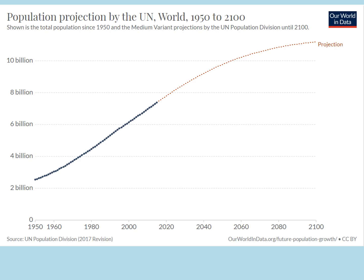Here we have the projected population that the UN believes we're going to see in the future. Currently we're over 7 billion, and by the year 2100 it's believed that we're going to have more than 10 billion people in the world. That's quite a lot of human beings taking up space on our planet.